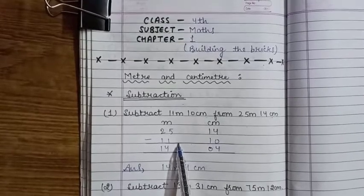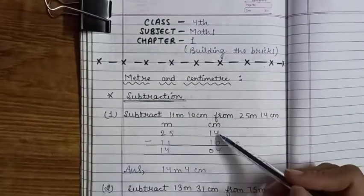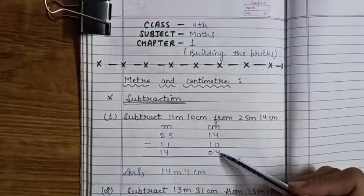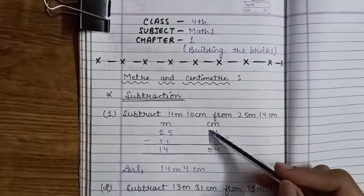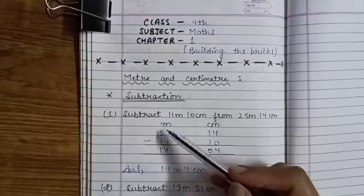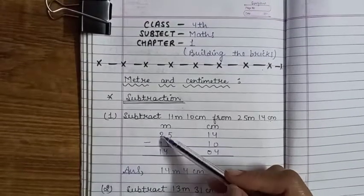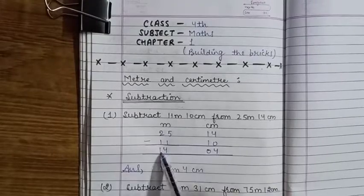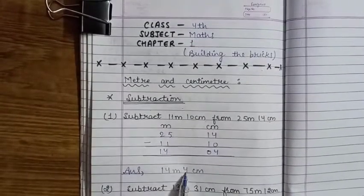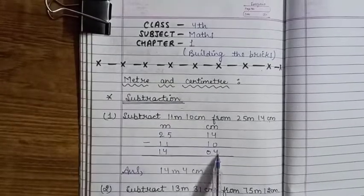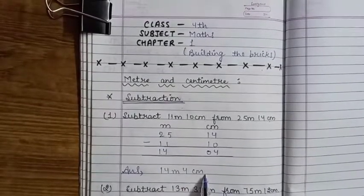First centimeter mein subtract karenge - 4 minus 0 is equals to 4, 1 minus 1 is equals to 0. Then meter mein 5 minus 1 is equals to 4, 2 minus 1 is equals to 1. So the answer is 14 meter 4 centimeter.